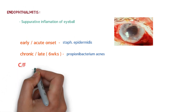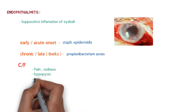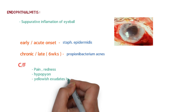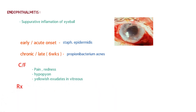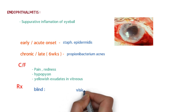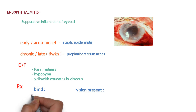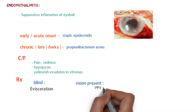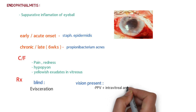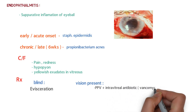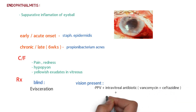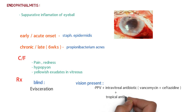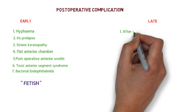Clinical features of endophthalmitis include pain, redness of the eye, hypopyon — pus in the anterior chamber — and a fluffy exudate in the vitreous. Treatment is divided into two scenarios: in a blind person, evisceration (removal of everything in the eye except the sclera) is performed. When vision is present, pars plana vitrectomy is done plus intravitreal antibiotics like vancomycin and ceftazidime, followed by topical antibiotics.